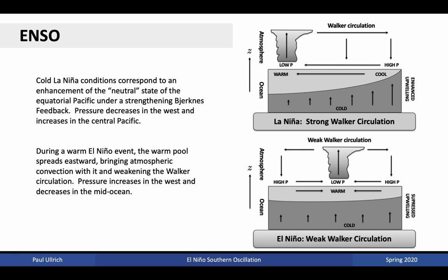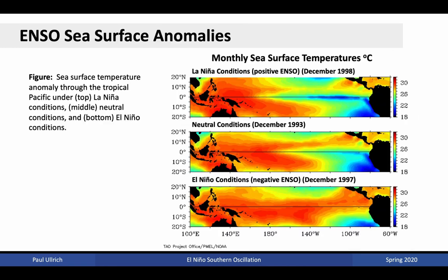The cold La Niña conditions shown in the top here correspond to an enhancement of the neutral state of the equatorial Pacific, with a strengthening of the Bjerknes feedback. Pressure decreases in the west and increases in the central Pacific. During the warm El Niño events, the warm pool instead spreads eastwards, bringing atmospheric convection along with it and weakening the Walker circulation. Pressure increases in the west and decreases in the mid-ocean. Here are sea surface temperature patterns associated with La Niña conditions on the top — that is, positive phase ENSO — neutral conditions in the middle, and negative ENSO or El Niño conditions on the bottom.